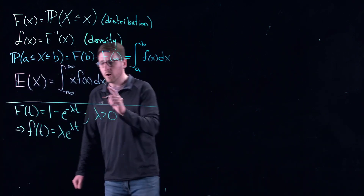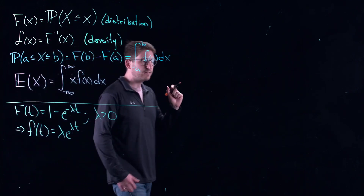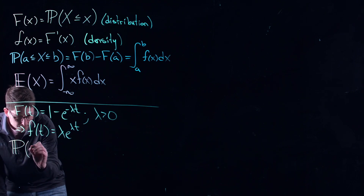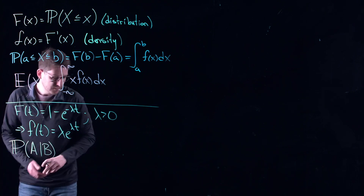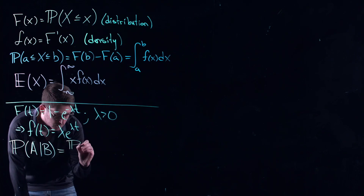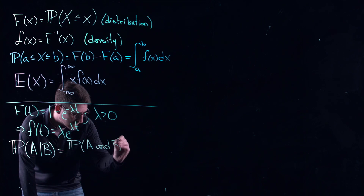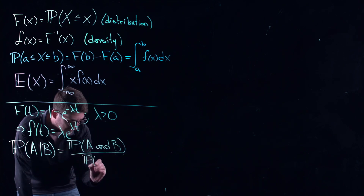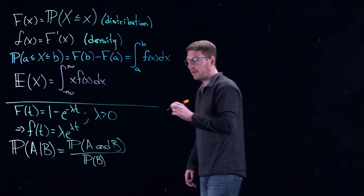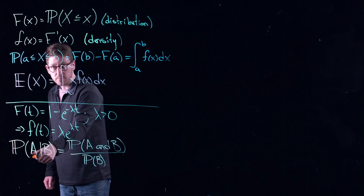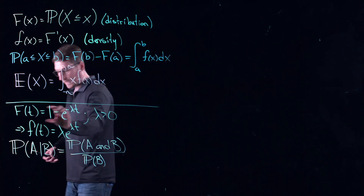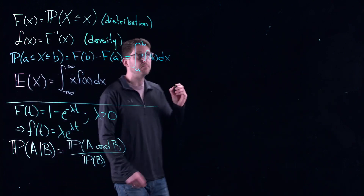Let's talk about conditional probability. The probability of event A happening given that B already happened equals the probability that both A and B happen — the intersection — divided by the probability that B happens. This gives an explicit likelihood for estimating whether A will happen given that we already know B happened. The interesting thing about the exponential distribution is that it has what's called a lack of memory.